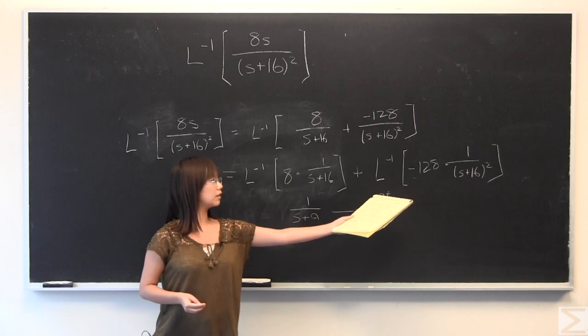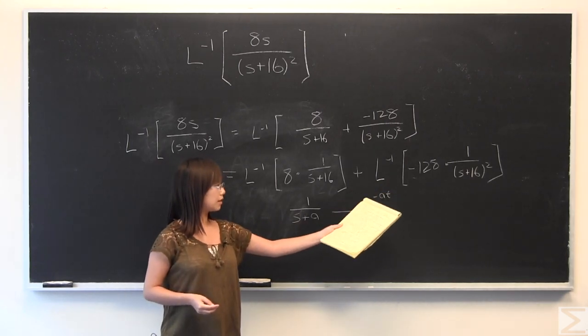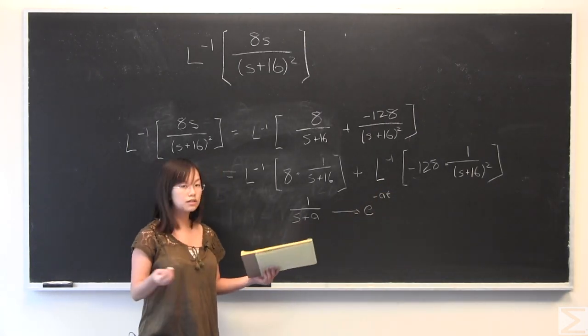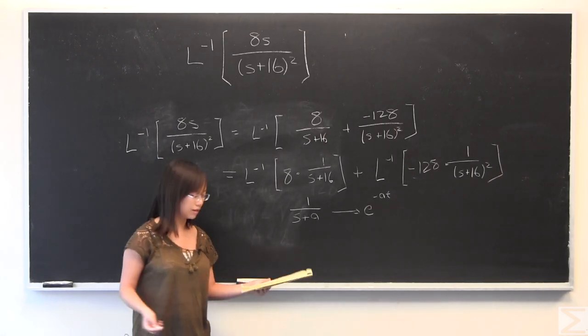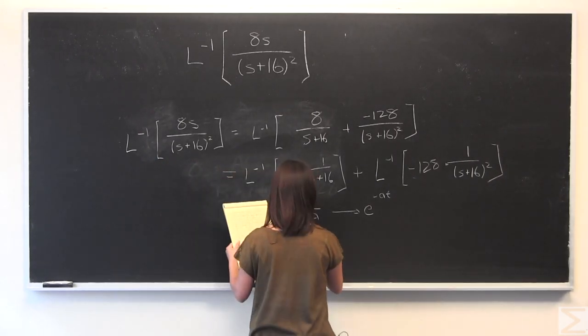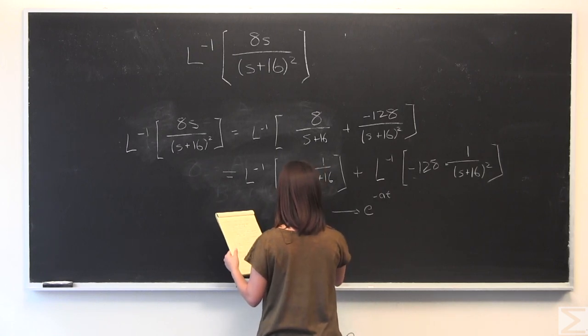And we also have, over here, that 1 divided by s plus 16 squared, this has the form 1 over s plus a squared. And that is associated with t e to the negative a t. I will also write that down.